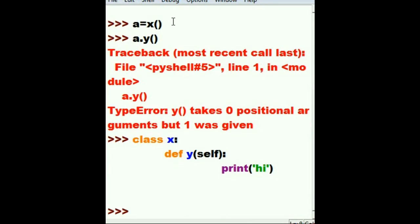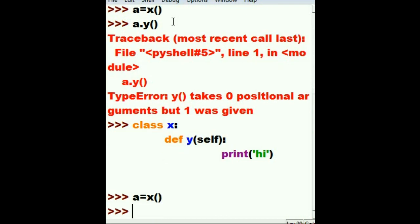Now I'm gonna go through this again. A is equal to X open close parens. I've just instantiated the object.